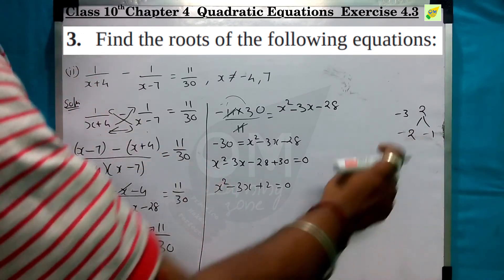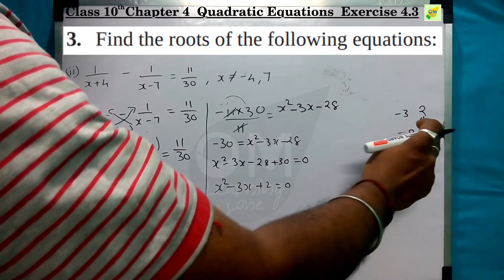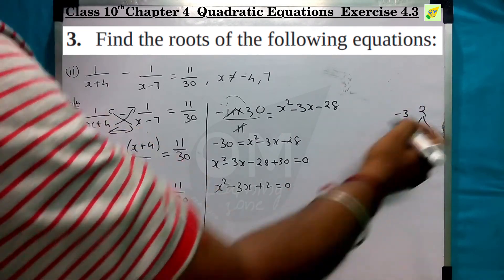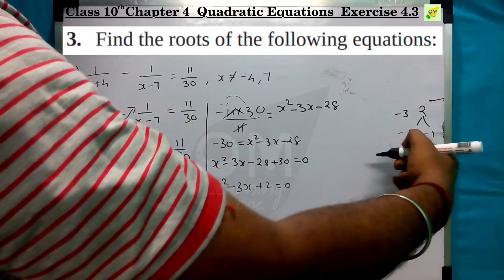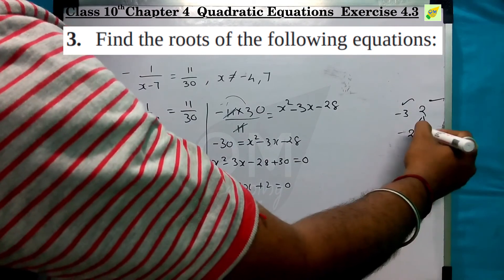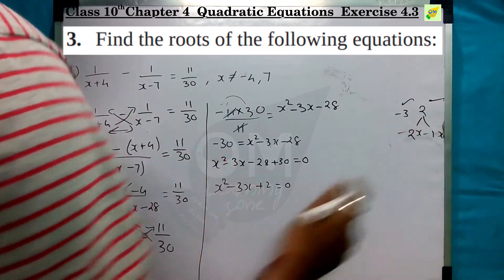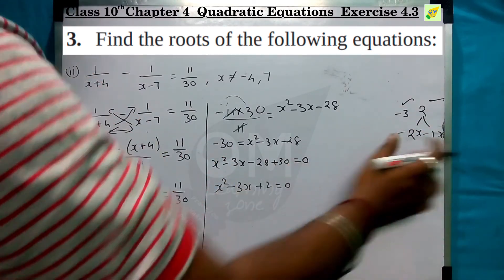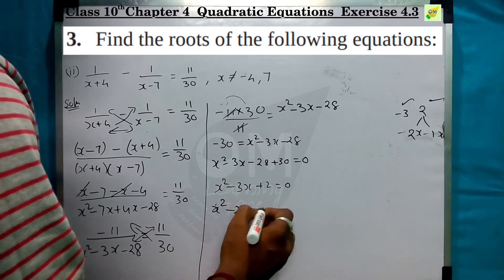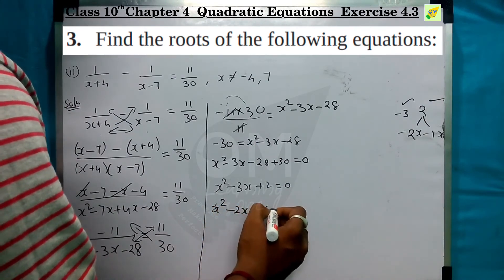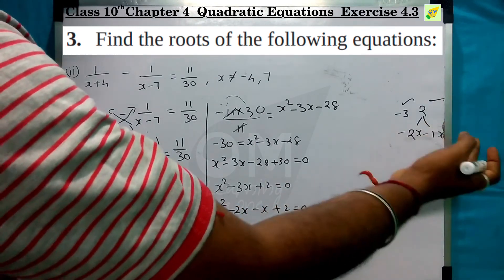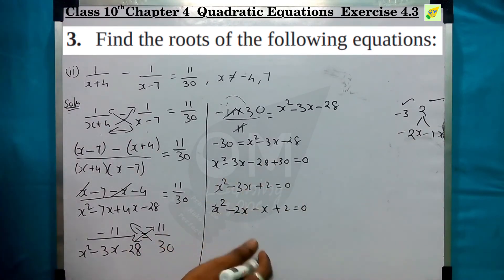For factorization: 2 into minus 1 is minus 2, and plus 2 into 1 is 2. It is satisfied: minus 2 minus 1 is 3, it is satisfied. So x² minus 2x minus x plus 2 equal to 0. Minus 1 times x gives the result 2 minus 1.